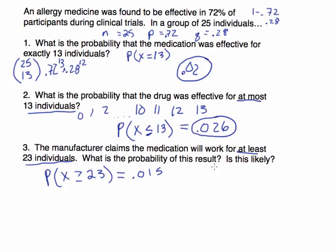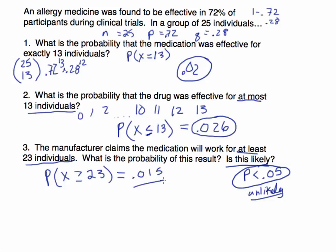Is this result likely? When determining likelihood, we check whether the probability is less than 0.05. If the probability is less than 0.05, we call it unlikely. Our probability of 0.015 is less than 0.05, so therefore this is unlikely to happen.